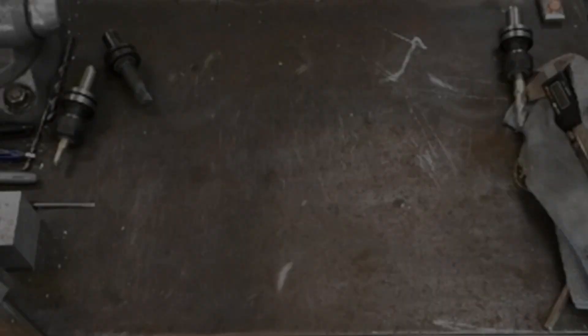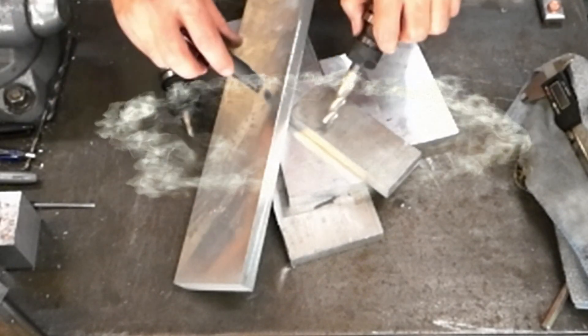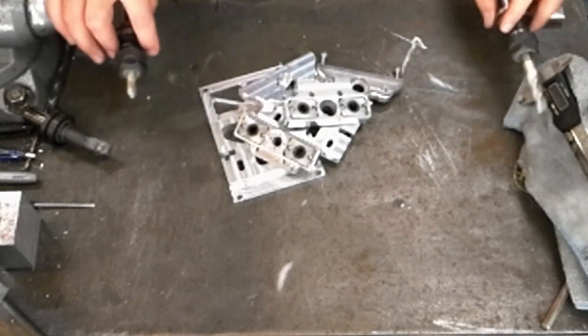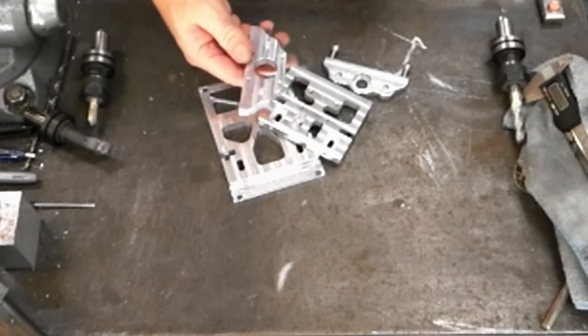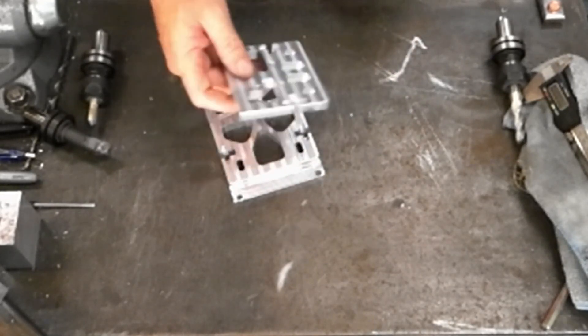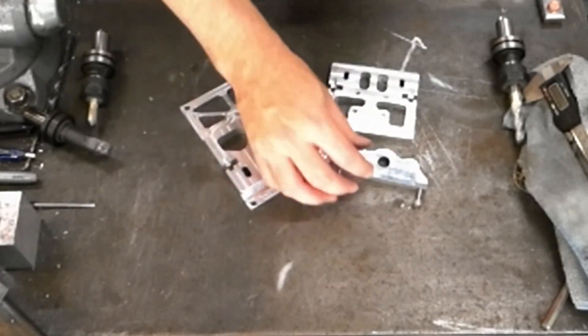I started with some scrap 6061, I think a bit of Mic 6. I machined it a bit, and these are the main components. The main vertical and horizontal pieces, and some guide stuff.